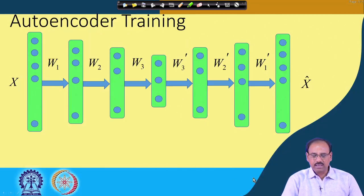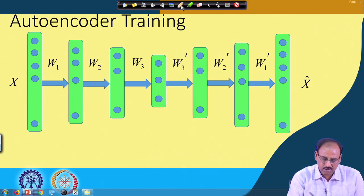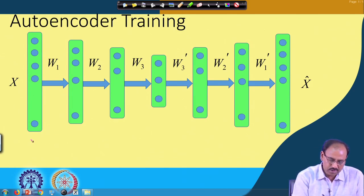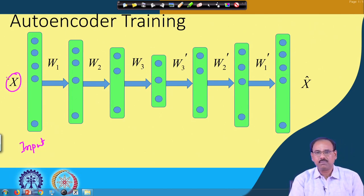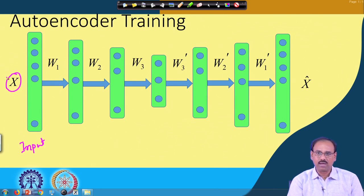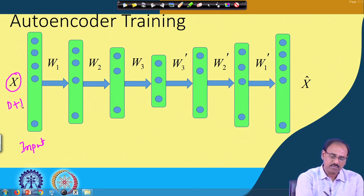A typical figure of a deep autoencoder looks like this. We have an input layer where input data x is fed. The number of nodes in the input layer is the same as the number of elements in vector x plus 1, because we also want to incorporate the bias term. So if the dimensionality of x is d, the number of nodes in the input layer will be d plus 1.